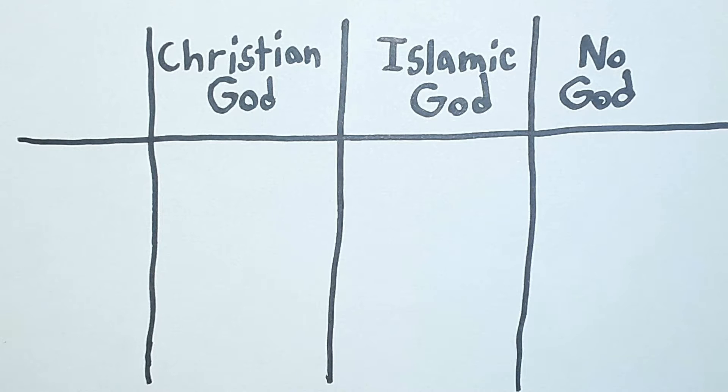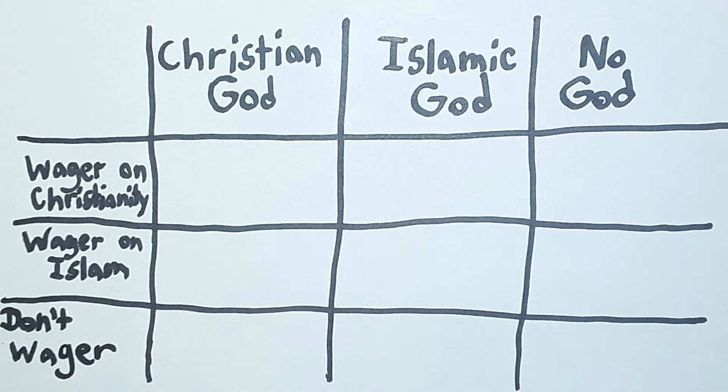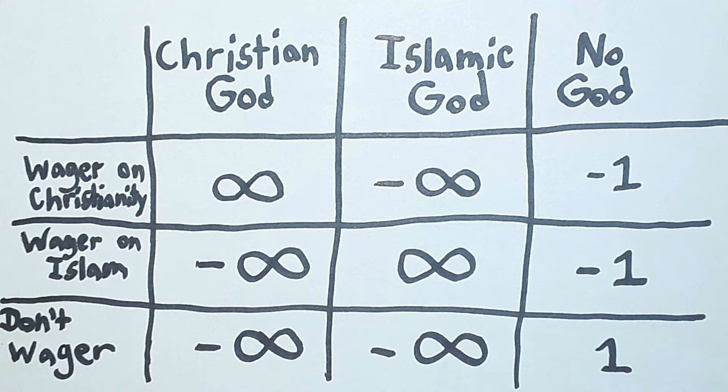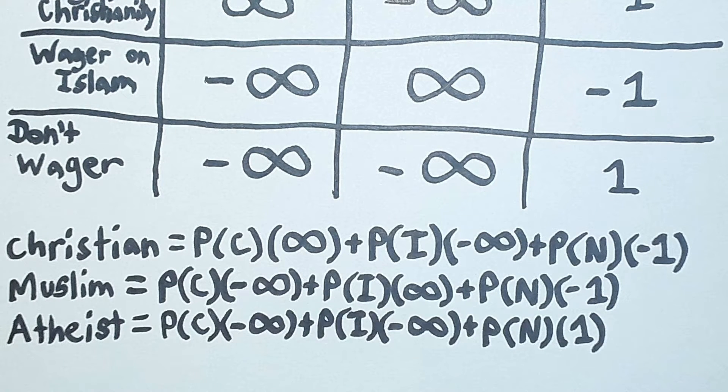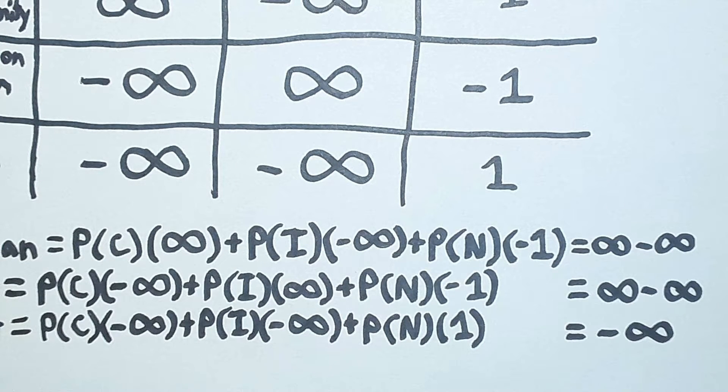Let's look at those first two objections against Pascal's wager more in depth. Let's expand this chart to include the Christian and Islamic views of God. Now, we have three options on how to wager. Let's fill out this matrix. If we do all the math, the finite parts of the equation get obliterated by the infinities, as per usual, and we'll find that the expected utilities of Christianity and Islam are infinity minus infinity.